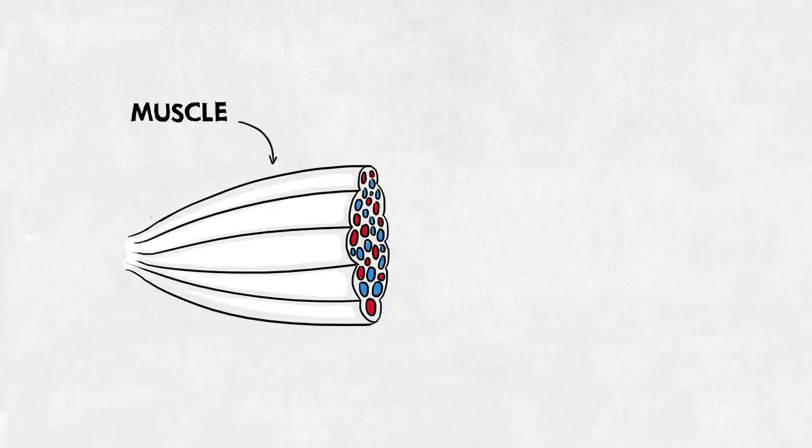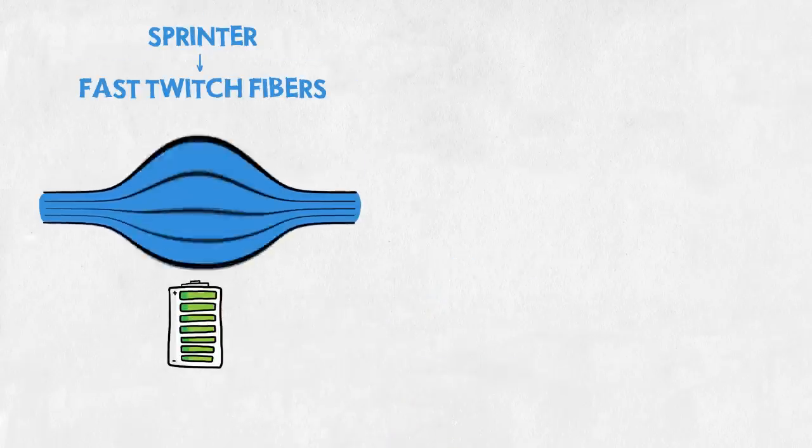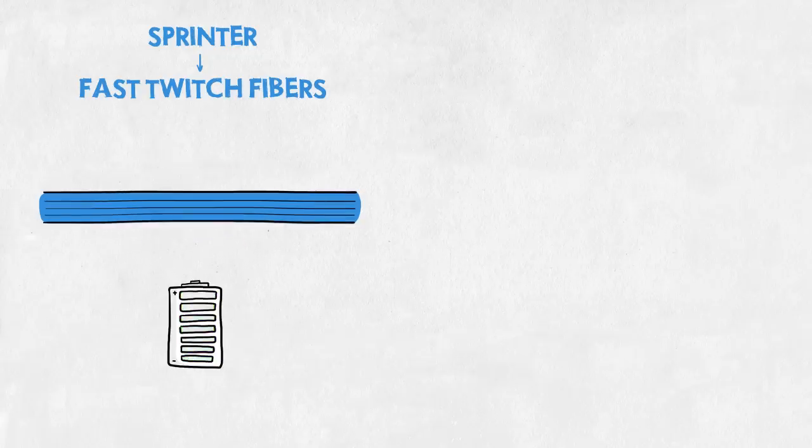What you need to know about muscles is that they contain different fibers: fast twitch and slow twitch. A sprinter will primarily train his fast twitch fibers. These react instantly and work super fast but quickly run out of power.